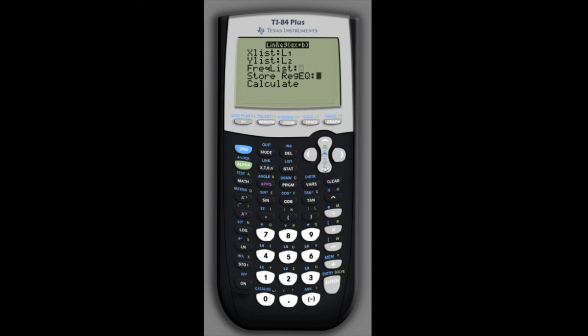We can just scroll down to calculate and it gives us the equation. The form of it is y equals ax plus b and we get the values for a and b as well as values for r squared and r.